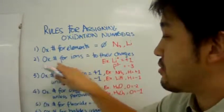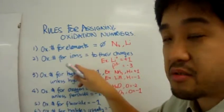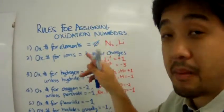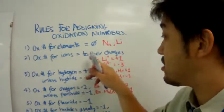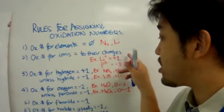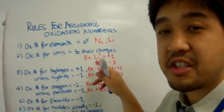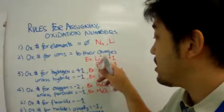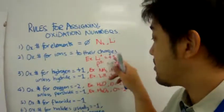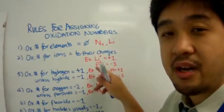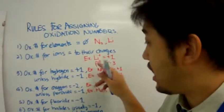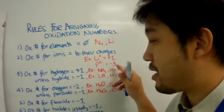Oxidation numbers for ions in a compound are equal to their charges. For example, a lithium ion is plus one and a phosphide ion is minus three.